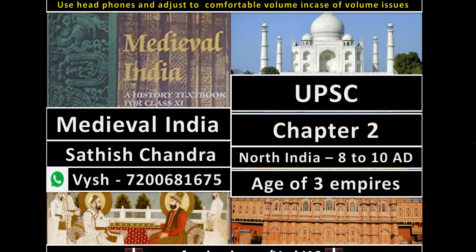This chapter is about three empires: the Palas, Pratiharas, and Rashtrakutas - three empires in different locations and their struggles during this timeline. It will be more of political history with a lot of ruler names and their administration, different ministers and terminologies. So what you should do is make notes of it, else it's very difficult to recollect. It's always good to do a comparative study of three empires.